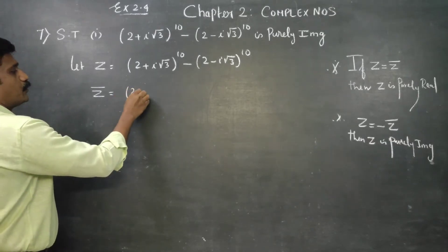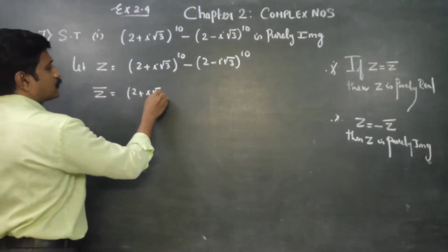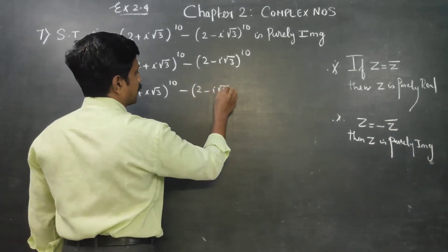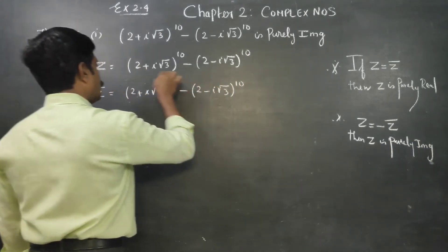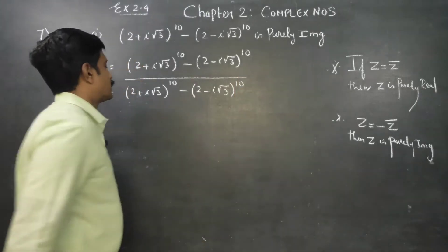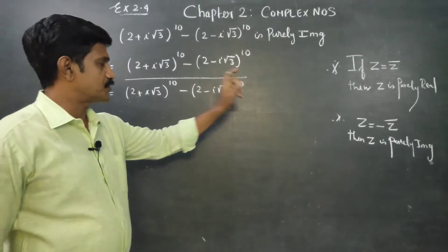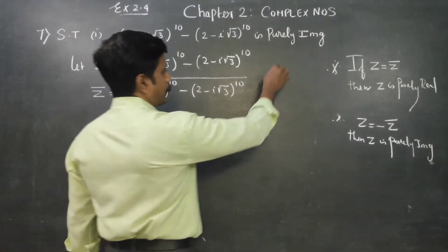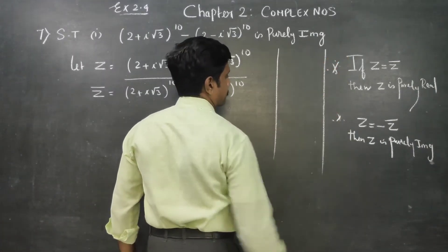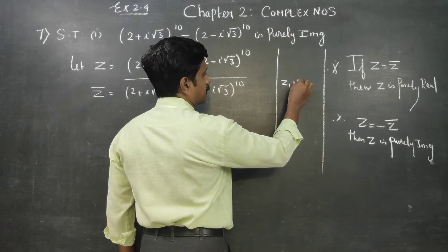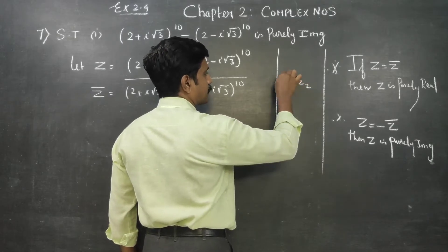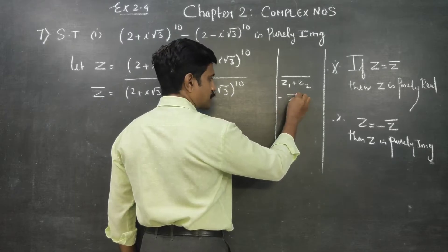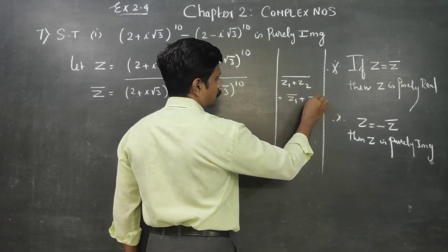We use the conjugate rule. The conjugate of the whole expression involves (3 - i√3)^10 and its conjugate terms. The rule states: the conjugate of Z1 plus Z2 equals Z1-conjugate plus Z2-conjugate.